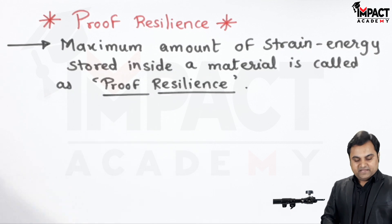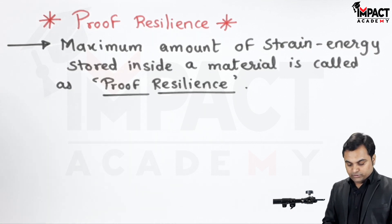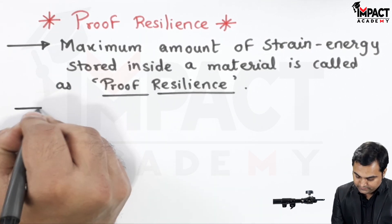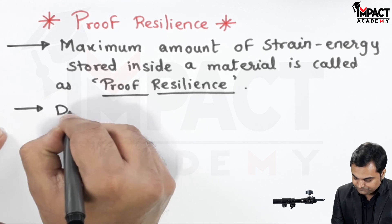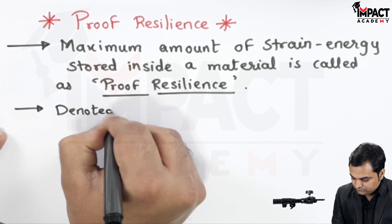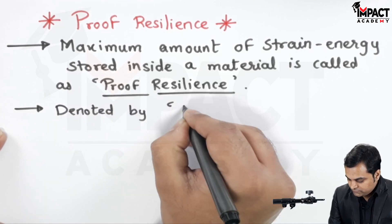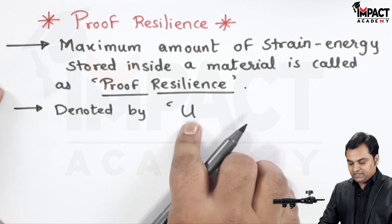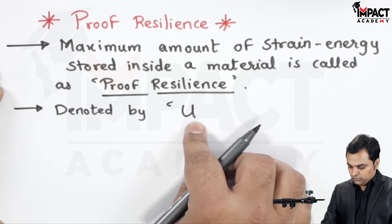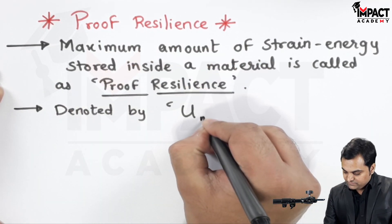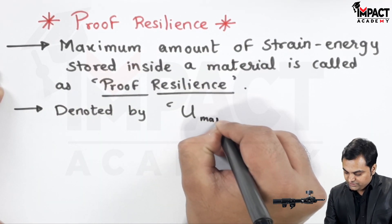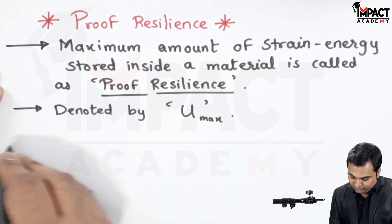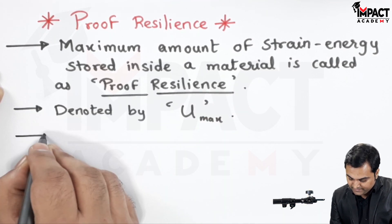Proof resilience is the maximum amount of energy stored inside the material. It is denoted by U max, since the notation for strain energy is capital U. So proof resilience is the maximum strain energy, denoted as U max, and the formula is given by: